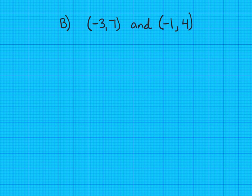Part B: (-3,7) and (-1,4). Notice that once again, we're going to skip a line or so and write our slope formula. M equals y sub 2 minus y sub 1 over x sub 2 minus x sub 1. And we're going to label our ordered pairs.